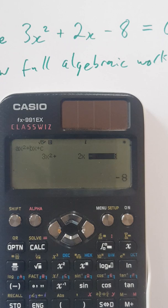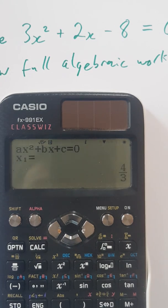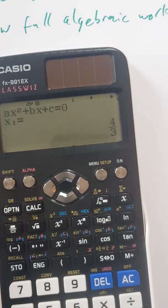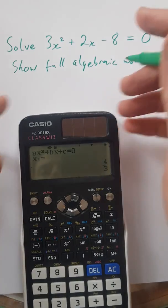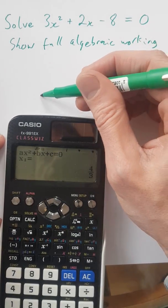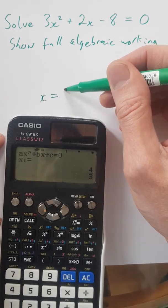Now, when you press equals again, it gives you 4 thirds. It says x1 equals 4 thirds. Let's just jot that down. Zoom out a little bit. I'm actually going to leave a space here. You'll see why in a moment. I'm going to write x equals 4 thirds.